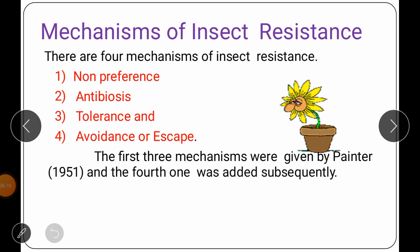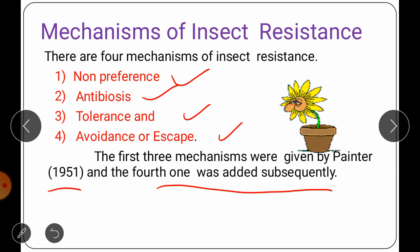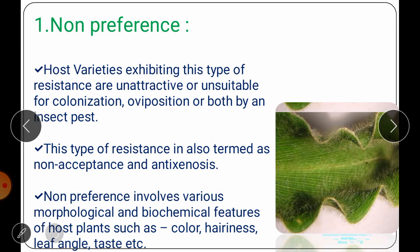There are four mechanisms of insect resistance: non-preference, antibiosis, tolerance, and avoidance or escape. The first three mechanisms were given by the scientist Painter in 1951, and the fourth one was added subsequently. A resistant variety may have one, two or more of these mechanisms.